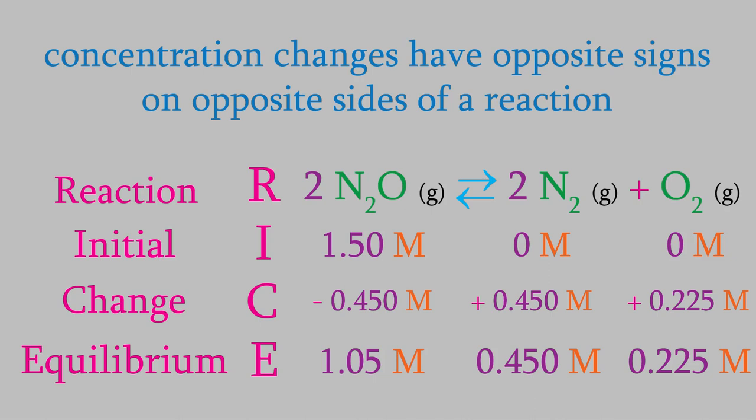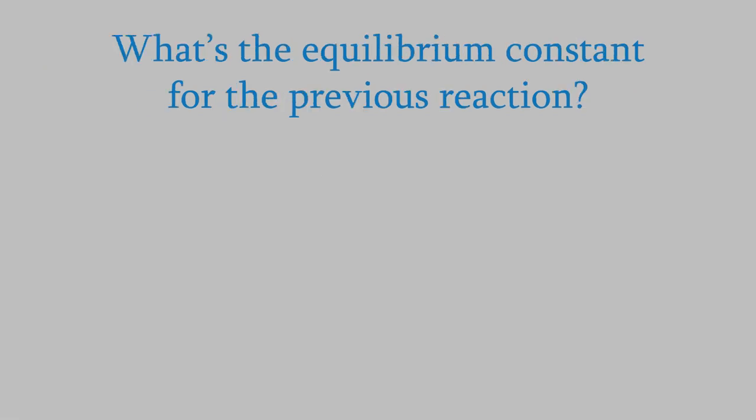Notice that, now that we solved this problem, we can also determine K, the equilibrium constant. Remember, to find the equilibrium constant, we divide the concentrations of the products by the concentrations of the reactants, each raised to an exponent corresponding to the coefficient in the balanced reaction.